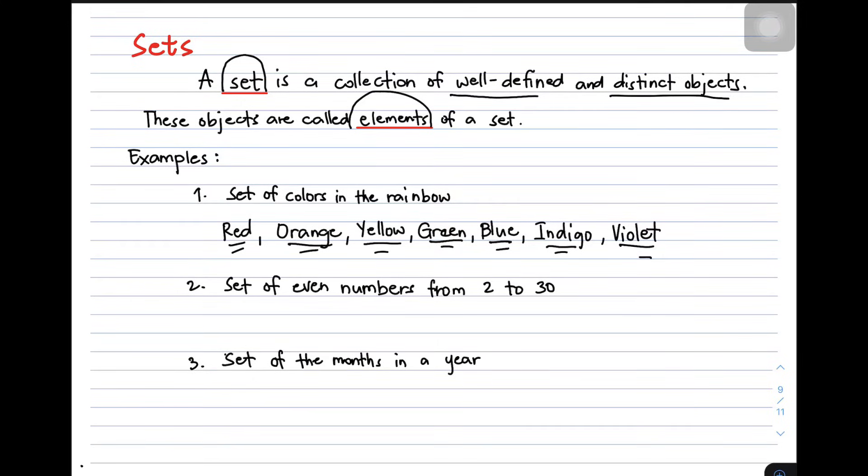So let's move on to the other example. Set of even numbers from 2 to 30. So do you think this second set is an example of a set? Yes, it's an example of a set. Why? Well-defined and distinct are its objects.